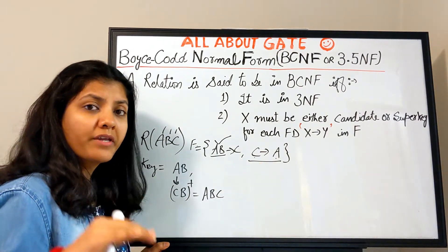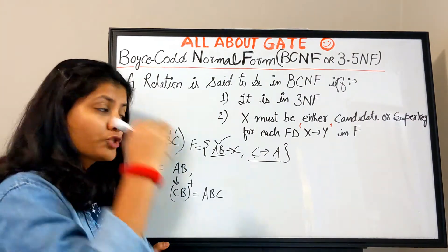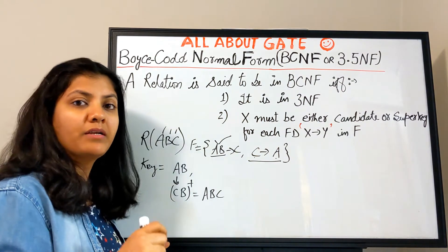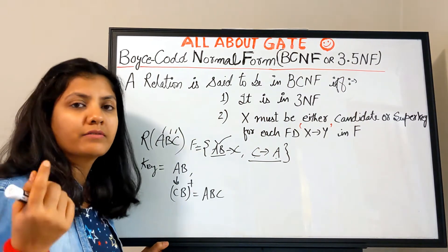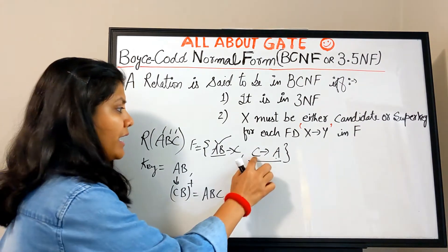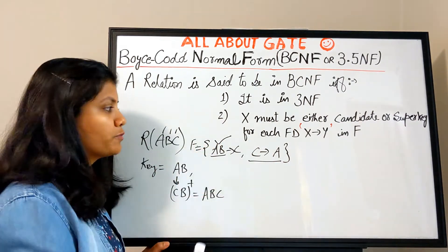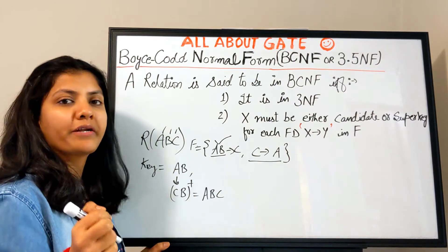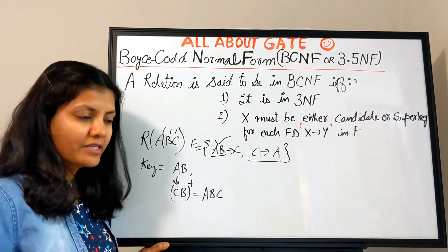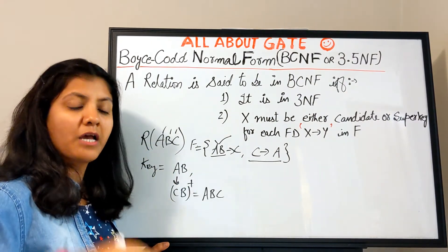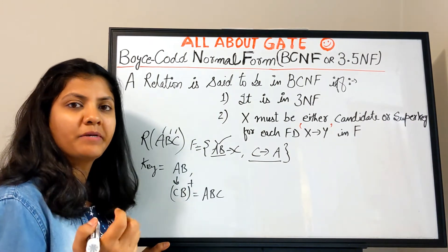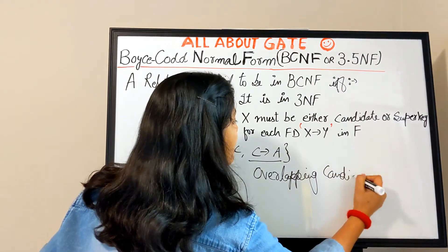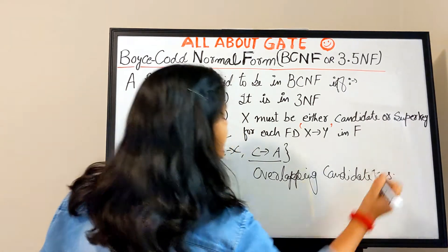BC → A: a part of the key is determining a part of the key, meaning a prime attribute is determining a prime attribute. This sort of functional dependency is not a problem for third normal form, but when we create the relation database and insert data, we see that because of this dependency there is certain redundancy available which could cause an inconsistent state. This is the kind of redundancy we want to eliminate.